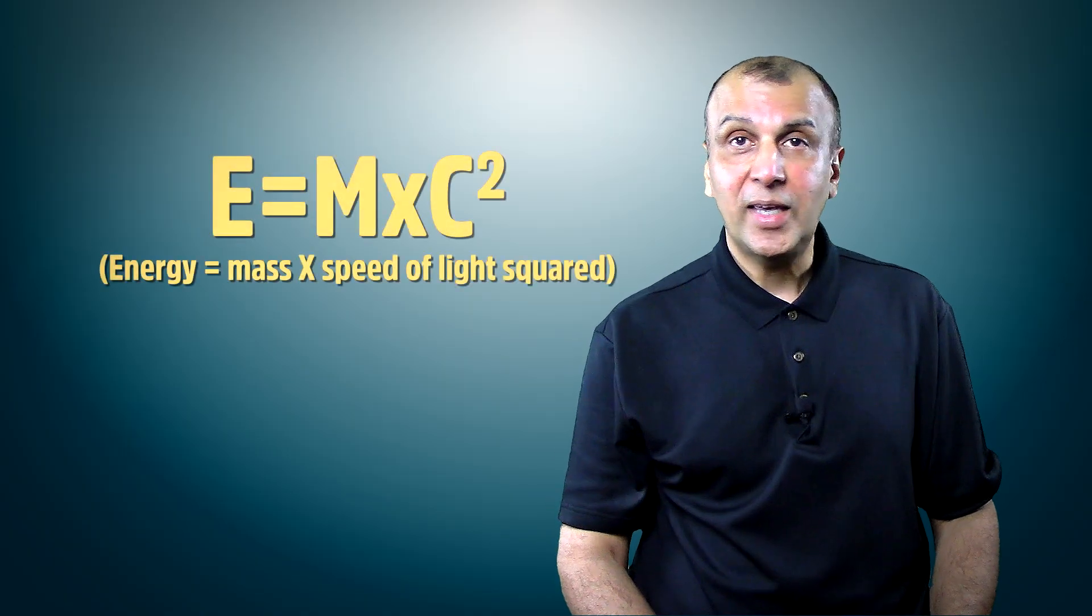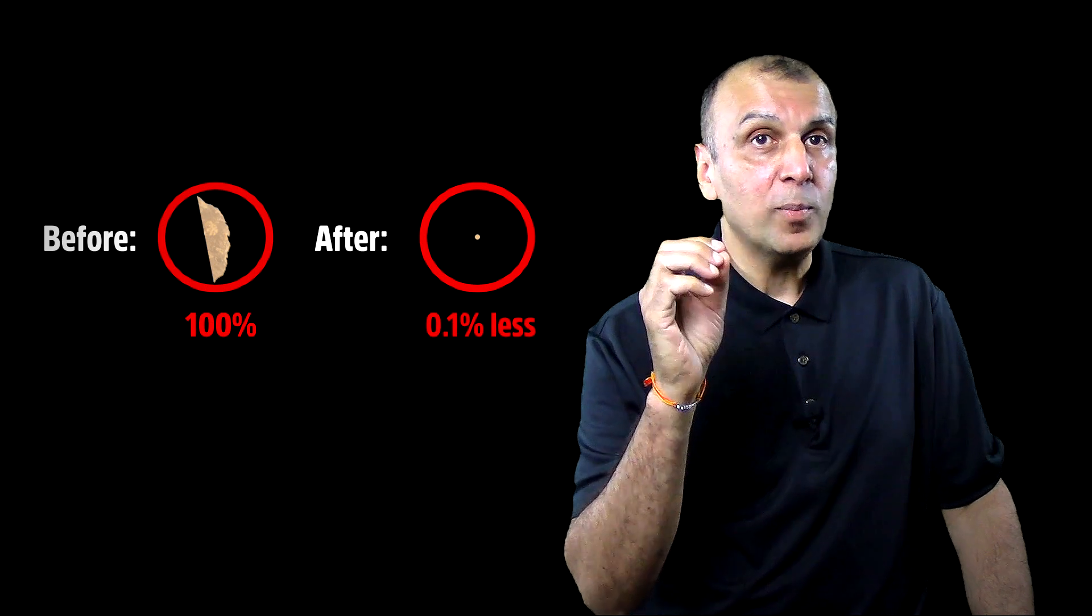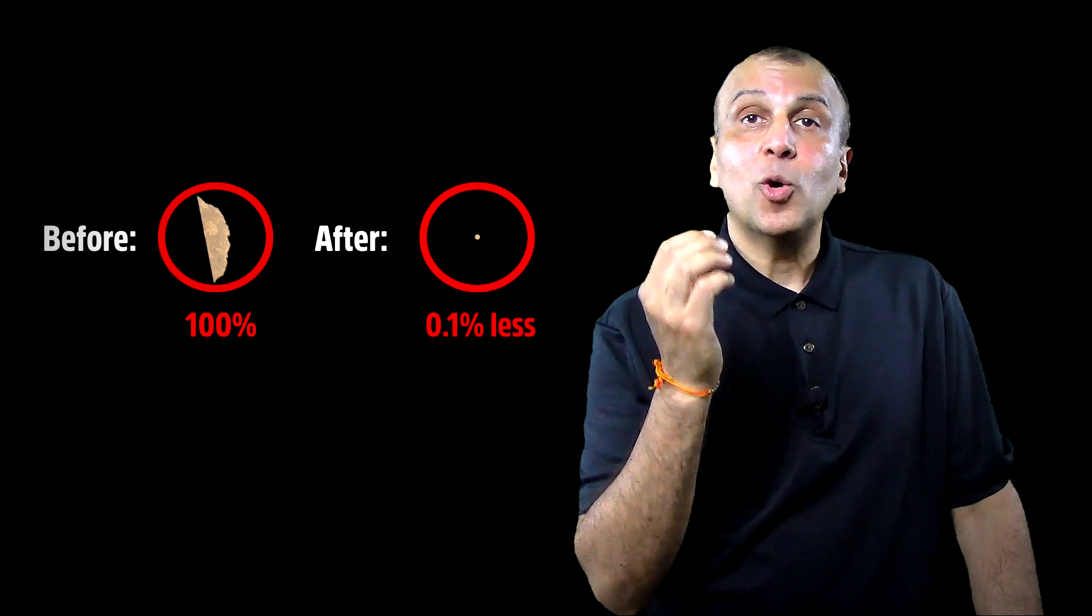And where exactly does all that energy come from? It comes from Einstein's famous equation, E equals mc squared. The mass of the material left over from the nuclear bomb is slightly less than before the explosion, only about 0.1% less. And that 0.1% is what causes that huge explosion.